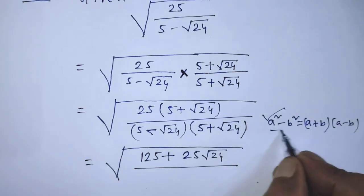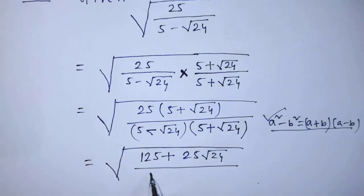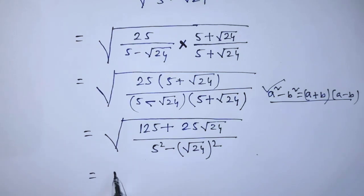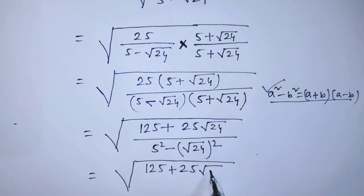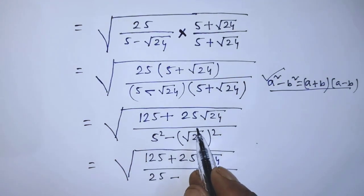According to this formula, we can write the denominator as 5 squared minus (square root of 24) whole squared. So we get the square root of 125 plus 25 times square root of 24, all over 5 squared which is 25, minus the square root and square canceling to give 24.